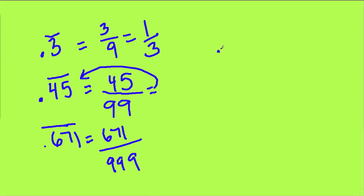Terminating decimals, like 0.3 - not 0.3 repeating - would just be 3 over 10, because this is the tenths place. So if there's one digit, there's one zero down here: 3 over 10.